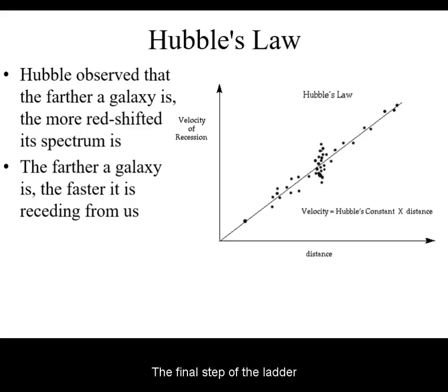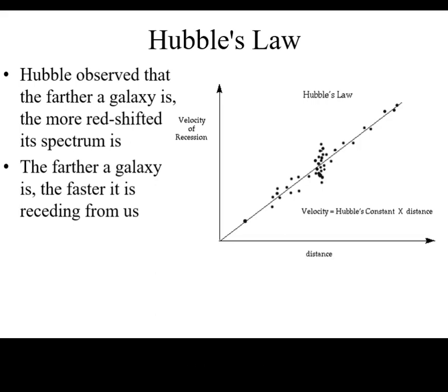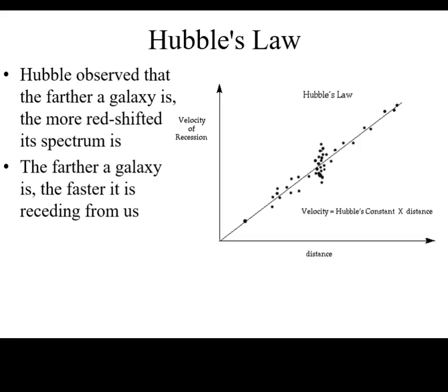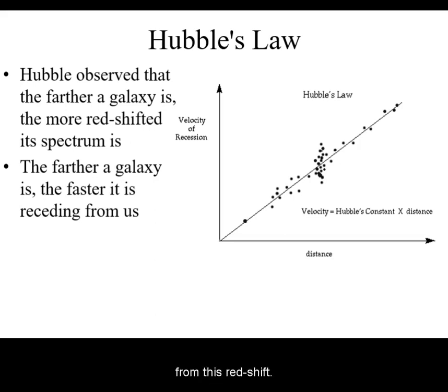The final step of the ladder is Hubble's Law. Hubble's Law states that the farther away a galaxy is, the greater its spectrum is redshifted. For galaxies billions of light-years away, we can deduce their distance from this redshift.